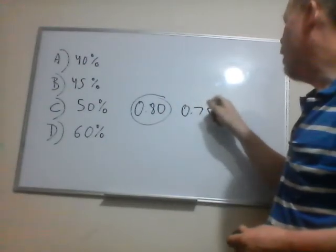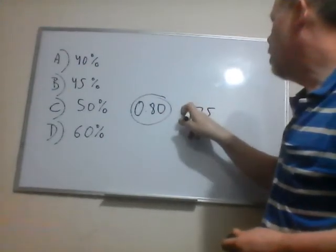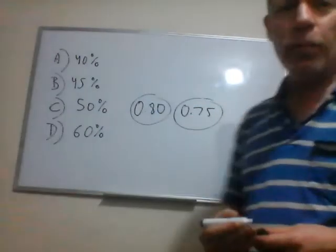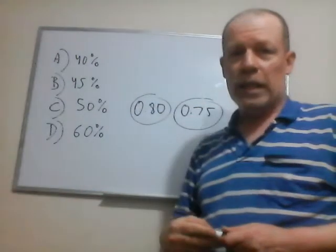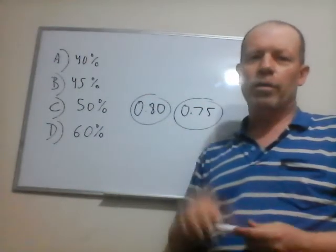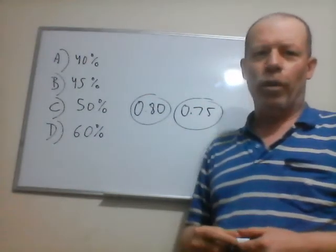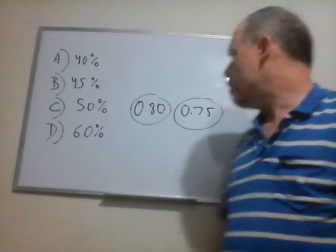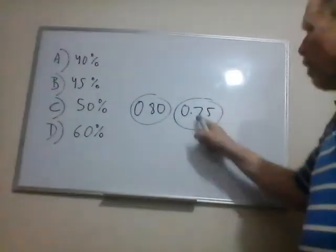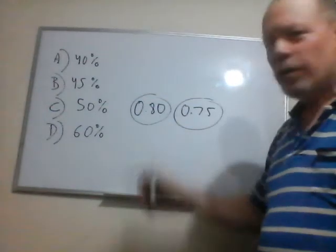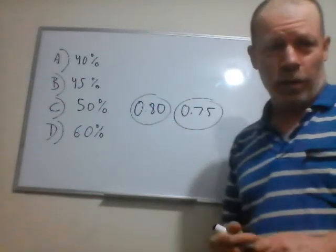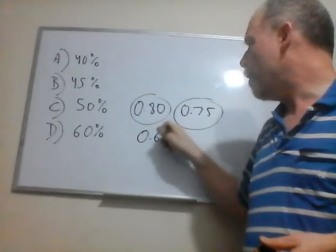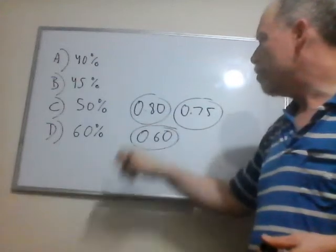Now I have had students who say they can't do this problem without a calculator — they were incorrect, they just felt like using one. Three quarters of 0.8 should be 0.6. So 0.8 times 0.75 equals 0.6. But be careful — what are you solving for?